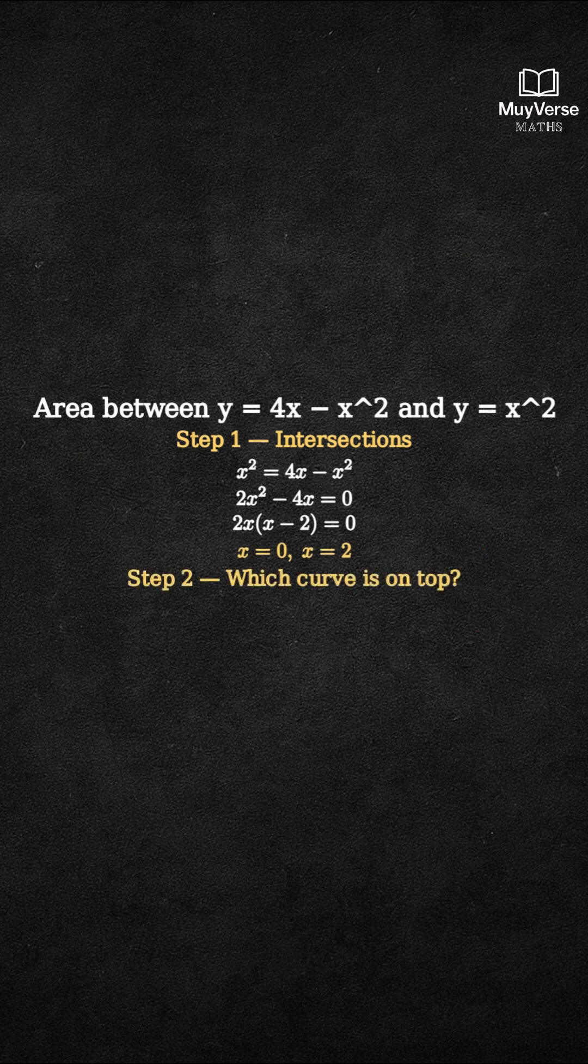Step 2, decide which curve is on top between 0 and 2. Consider the difference: 4x minus x squared, minus x squared, equals 4x minus 2x squared.